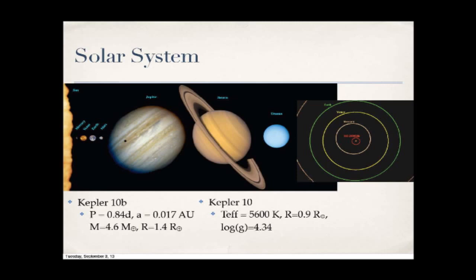In terms of how hot it would be on the surface, we're talking temperatures around 2,000 Kelvin. This is not the case where you hear myths of going outside and frying eggs on your driveway — in this case, you would be cooked as well.